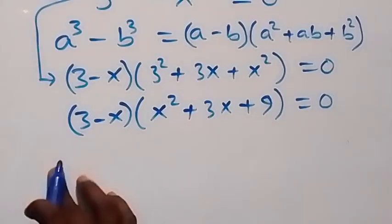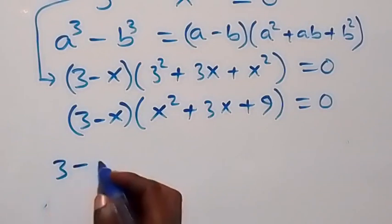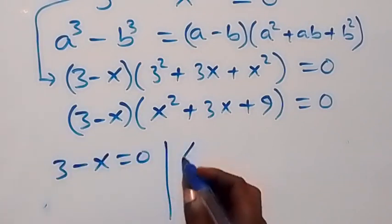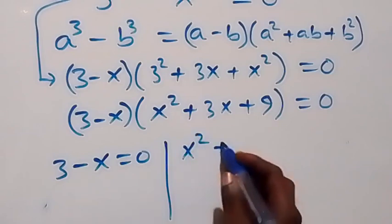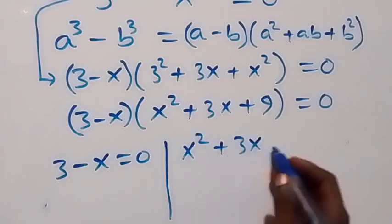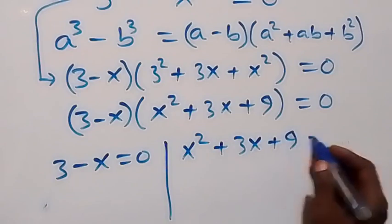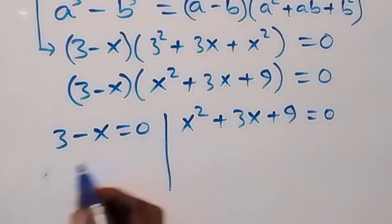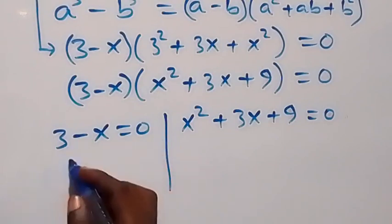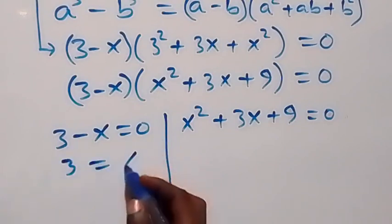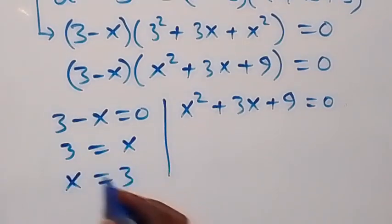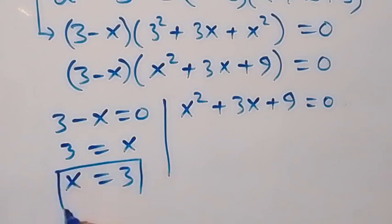The two cases here are: 3 minus x equals 0, or x squared plus 3x plus 9 equals 0. From the first case, taking minus x to the other side gives plus x, so it implies that 3 equals x, which is the same as x equals 3. So we have a real solution on this side.